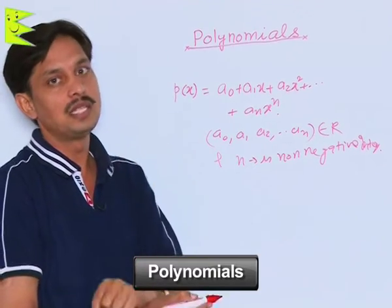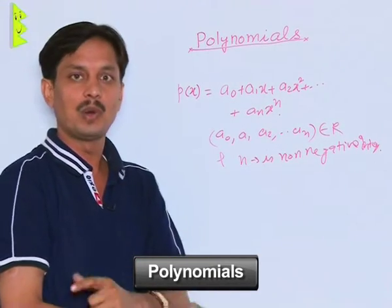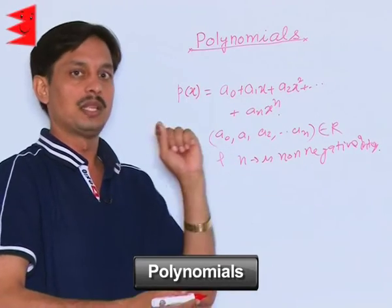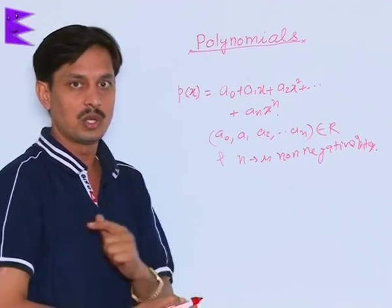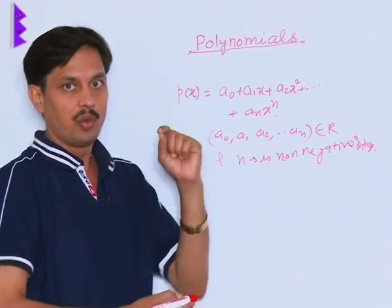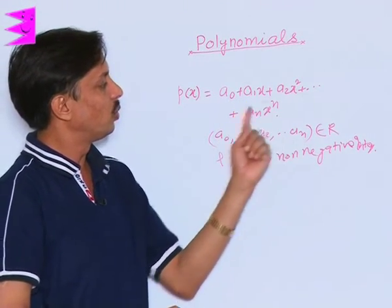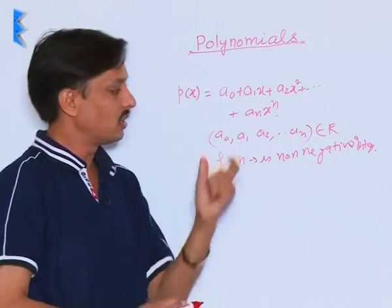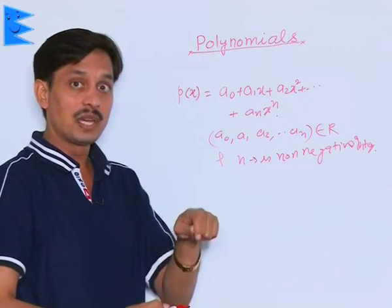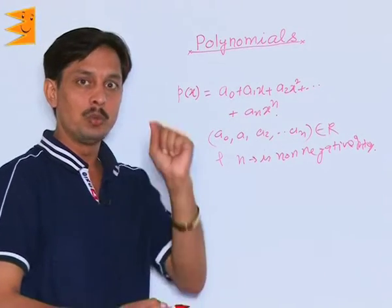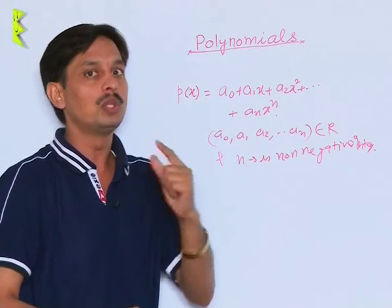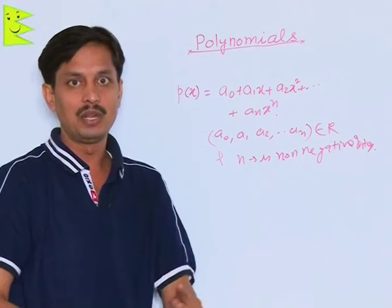So polynomial is an algebraic expression of the form a0 plus a1x plus a2x² plus a3x³ plus ... plus anx^n, where these coefficients a0, a1, a2, ..., an are real numbers that may be rational or may be irrational.